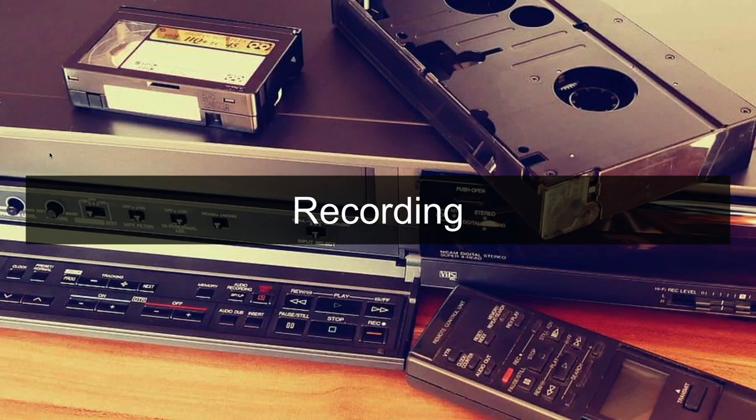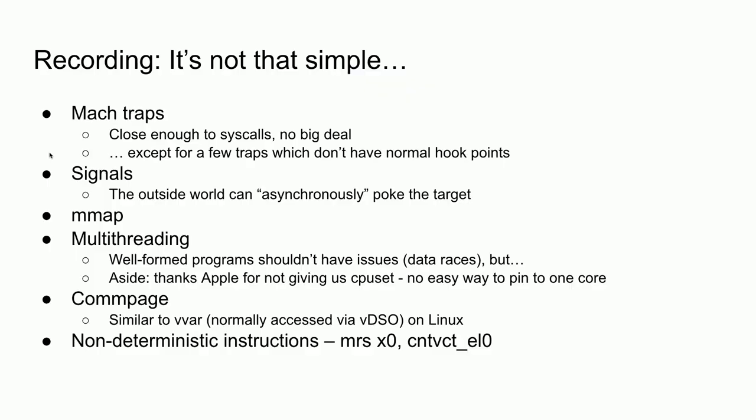Nick will talk about how we started with recording. In addition to normal syscalls as on Linux, we have a few other things to contend with. On Mac you have Mach traps — these are close enough to syscalls, not a big deal — except there are a few traps which don't have normal hook points, specifically fast-pathed in the kernel, things like get_time. You also have signals — asynchronous events coming from outside the target.